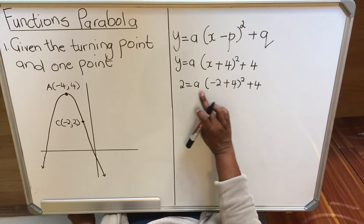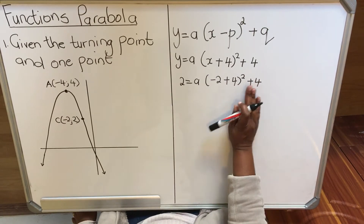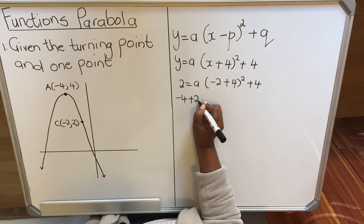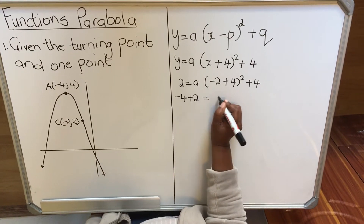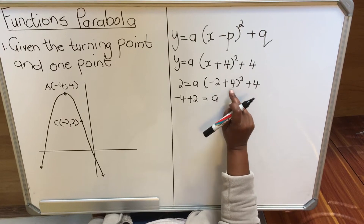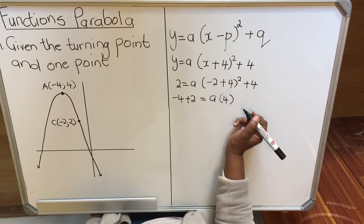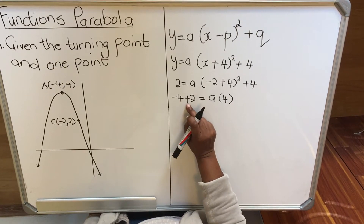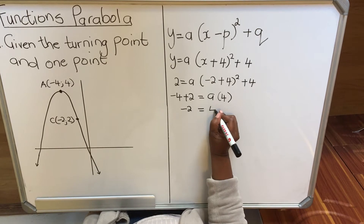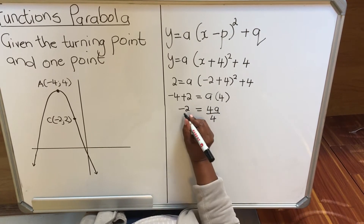Learners usually make a mistake of adding unlike terms here. You're going to take the 4 to the other side, so you have -4 + 2 = a. That gives -2 = a times (-2 + 2)², which is (-2 + 2) squared. That simplifies: -2 = a times 4, so we get -2 = 4a.